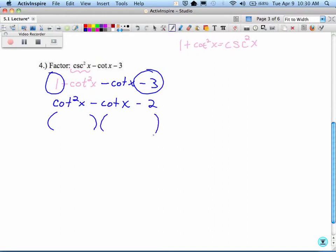I need a cotangent at the beginning. What are the factors of 2? 1 and 2. Which one has to be positive? Which one has to be negative? So we add up the negative 1 in the middle. Negative there. Positive there. And that is factored.